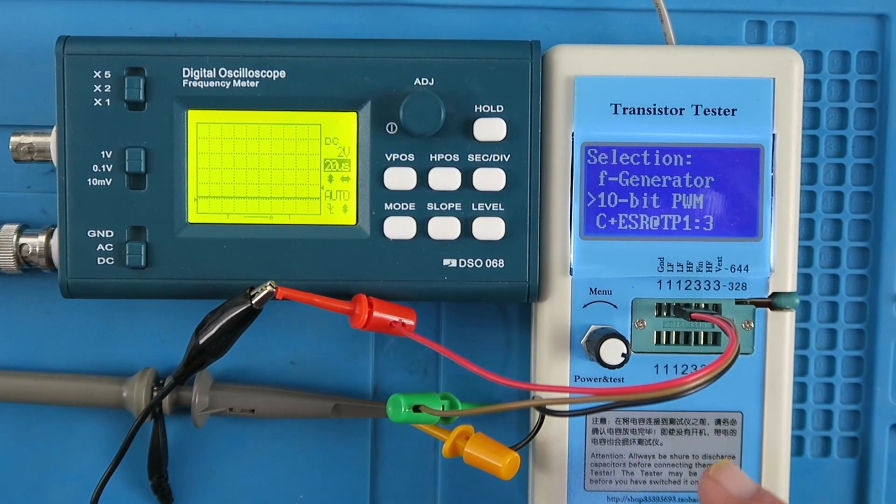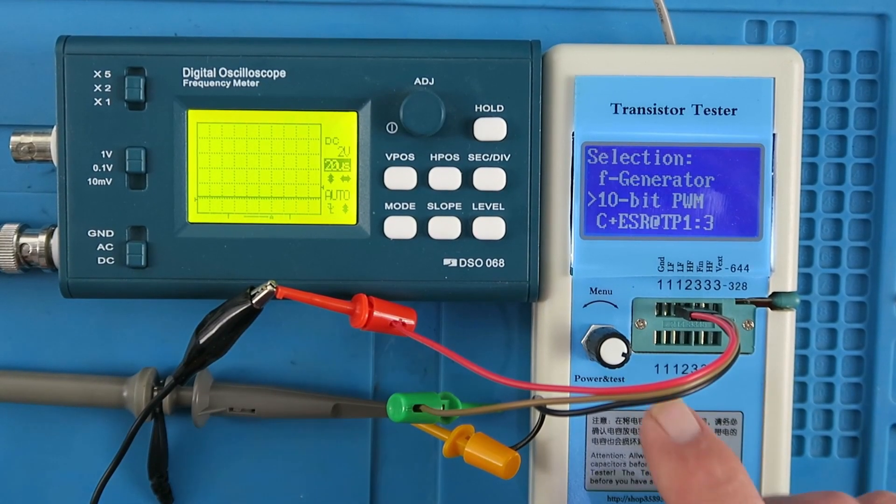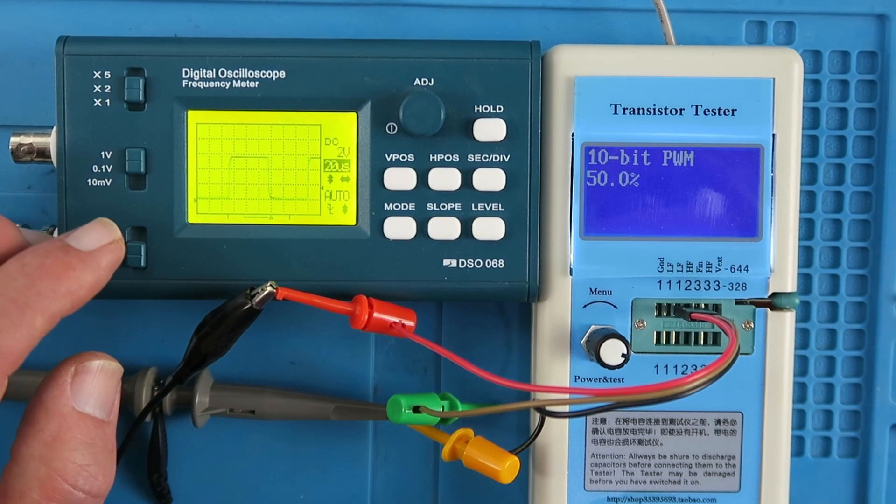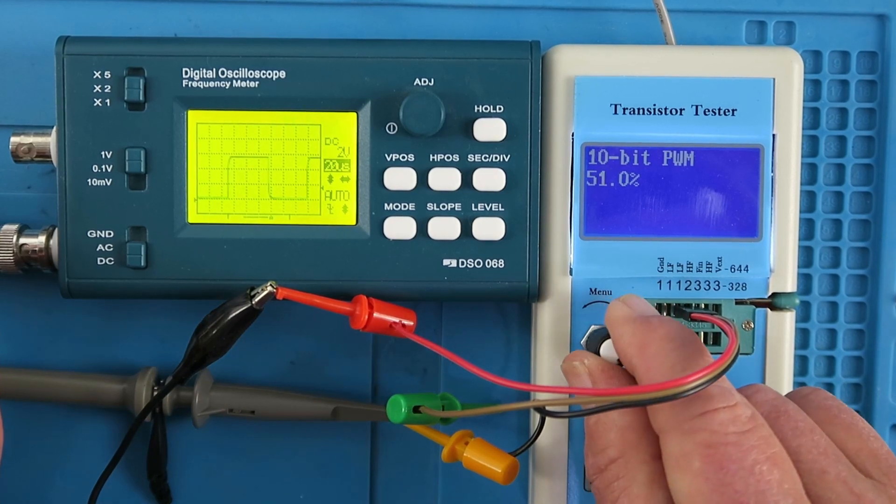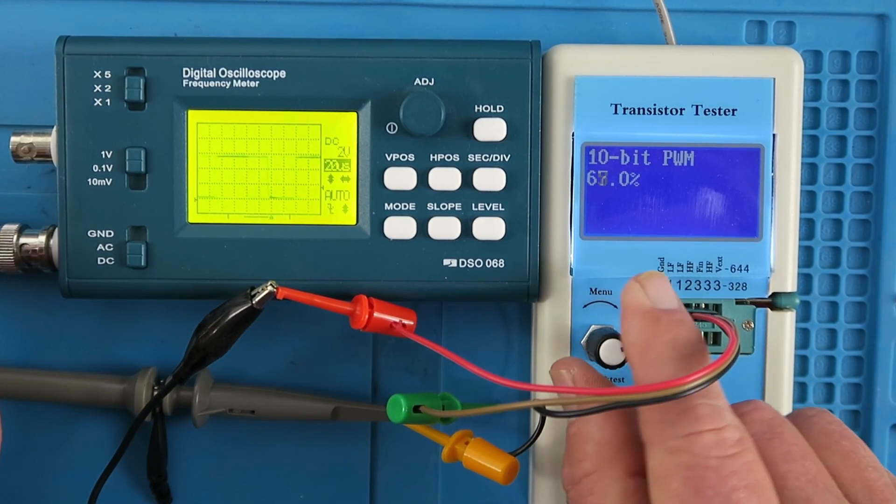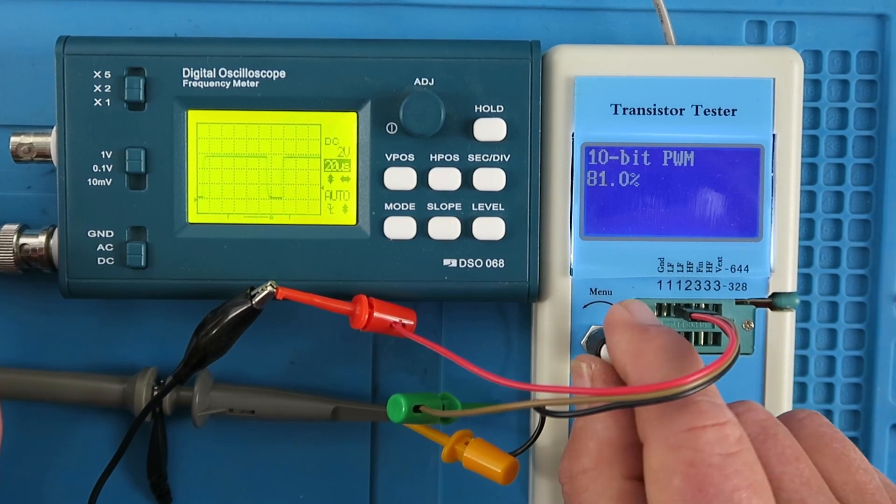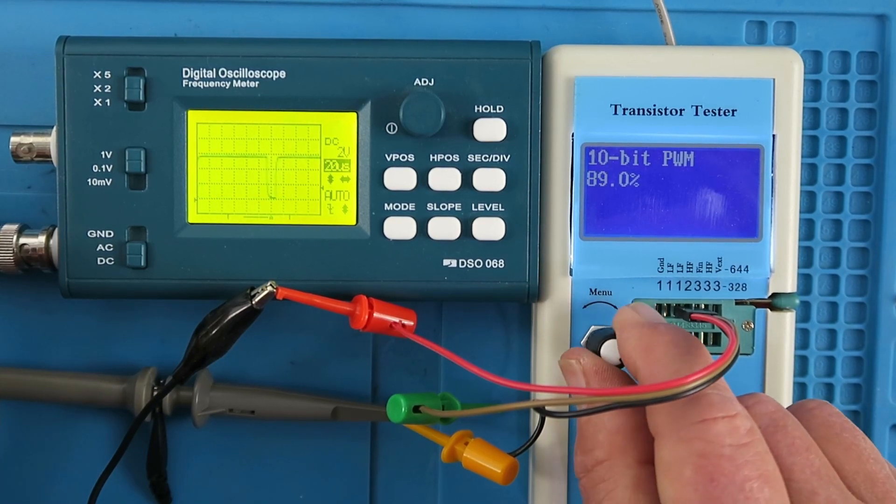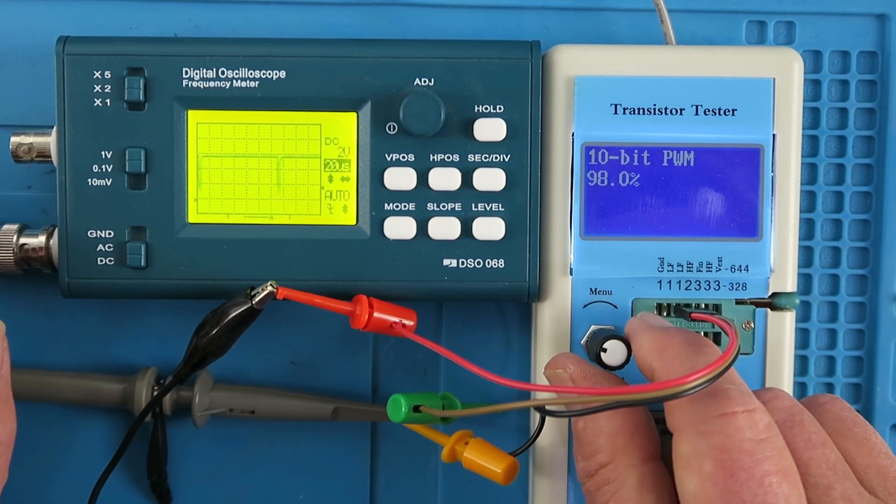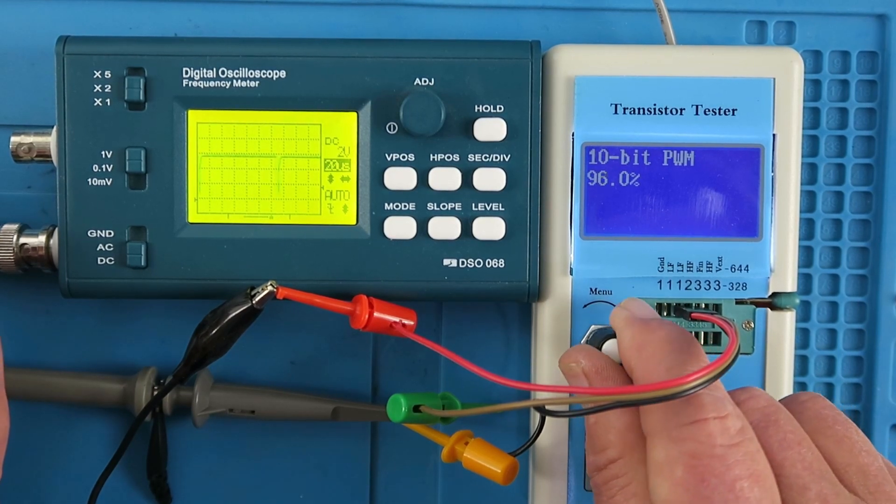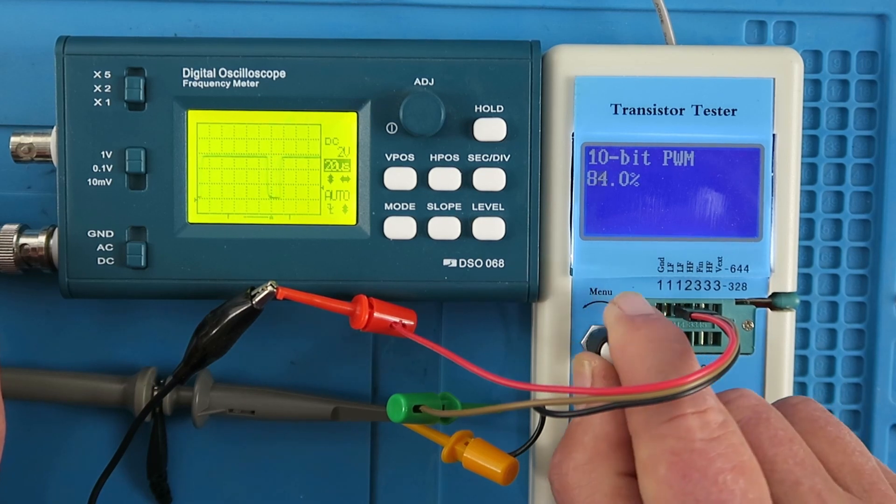Let's look now at the 10-bit pulse width modulation. It starts off at 50%, so as we expect a square wave there. And as we increment, we can see the pulse width getting greater until we reach 99%. And obviously we have a very sharp pulse there. And we can do the same in the reverse direction.